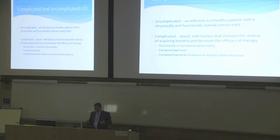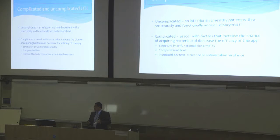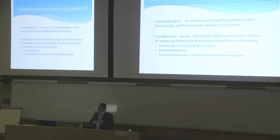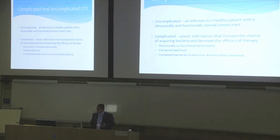Uncomplicated means an infection in a healthy patient with a structurally and functionally normal urinary tract. Complicated means factors that increase your chance of acquiring bacteria, or worsen the result, or decrease the efficacy of treatment — a compromised host, increased bacterial virulence, or structural/functional abnormality. This distinction is important because treatment is tailored. A simple infection may not need imaging; complicated infections require aggressive management to prevent recurrence or progression to urosepsis.